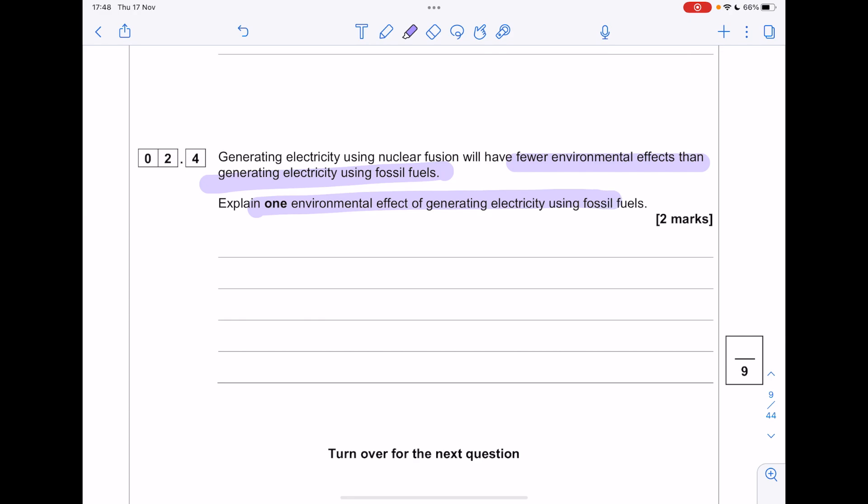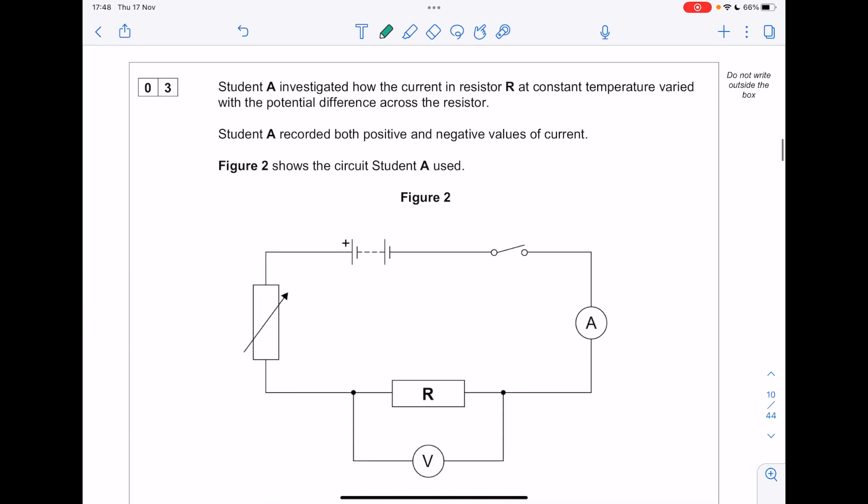Generating electricity using nuclear fusion will have fewer environmental effects than generating electricity using fossil fuels. Explain one environmental effect of generating electricity using fossil fuels. Burning fossil fuels releases carbon dioxide. Carbon dioxide is a greenhouse gas which causes global warming. When you explain something, you have to give the science behind it.